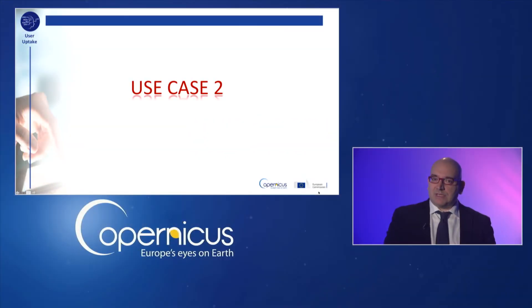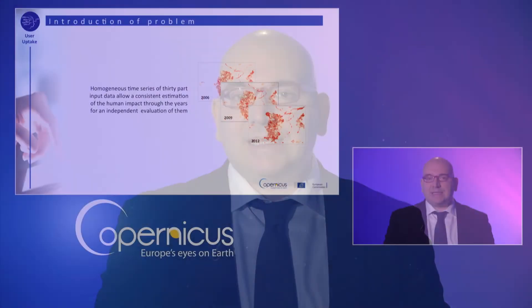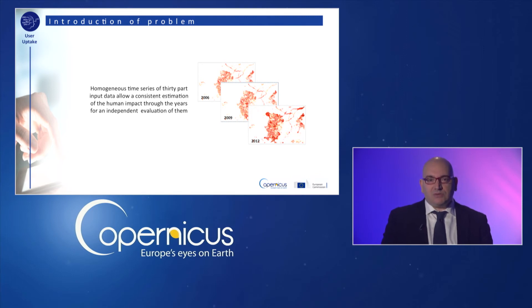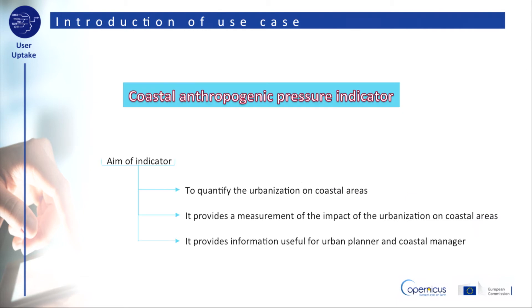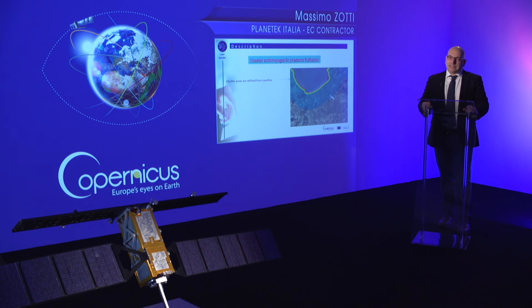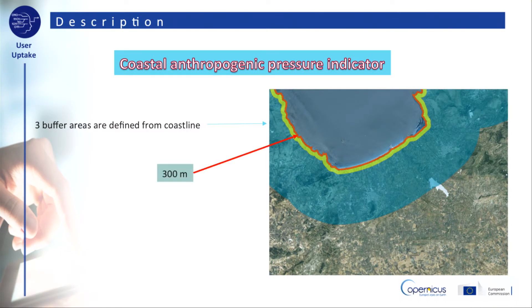Now, let's move to the second use case. In order to evaluate the impact of human settlements on the coastal areas, it is important to have a homogeneous time series of data. The imperviousness layer of the Copernicus Land Monitoring Service includes the maps of reference years 2006, 2009 and 2012. They will be used to derive the coastal anthropogenic pressure indicator. The purpose of this indicator is threefold: to quantify the urbanization on coastal areas, to provide a measurement of the impact of the urbanization on coastal areas, and to provide useful information to urban planners and coastal managers. The indicator will be extracted from three different buffer areas from the coastal line: 300m, 1km and 10km.